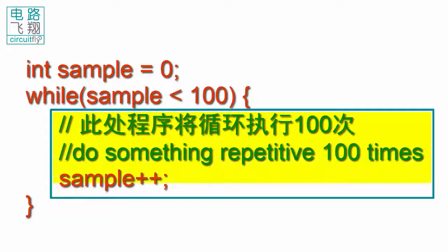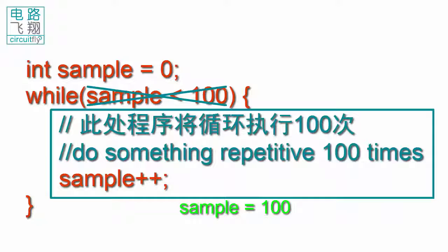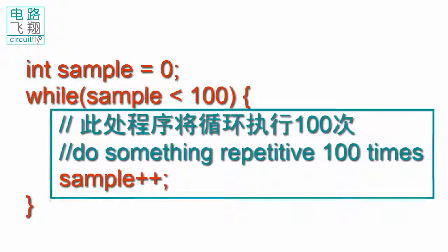当循环执行100次后,sample将等于100,表达式sample小于100变成假,不再成立,于是while循环结束。